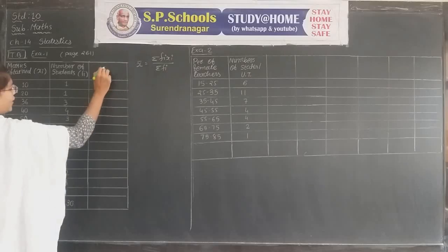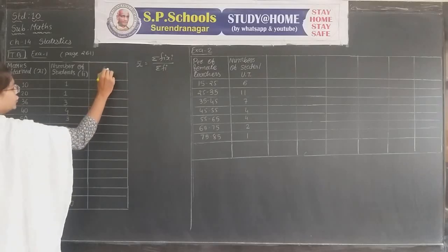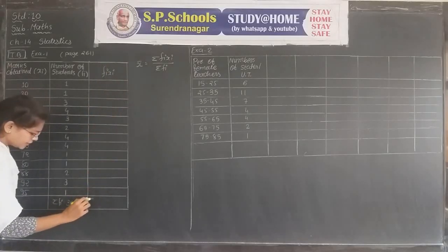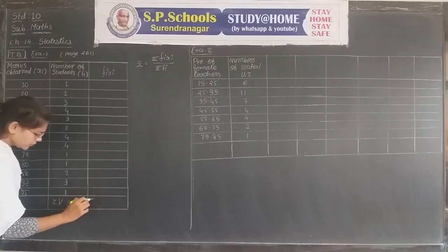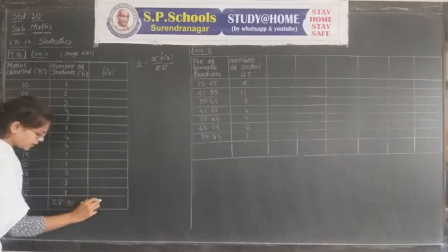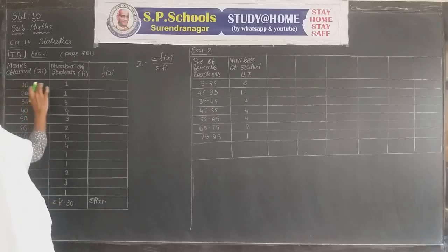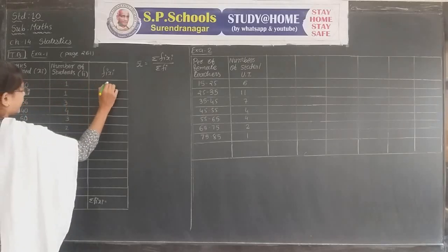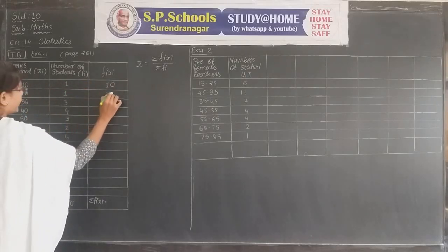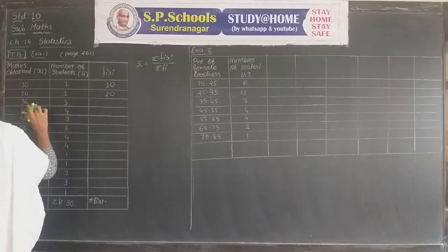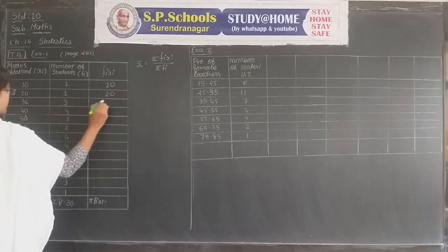Now we find the third column as fi × xi. We calculate each product: 10 ones are 10, 20 ones are 20, 36 threes are 108. Put the unit digit below the unit digit and the 10th digit below the 10th digit.